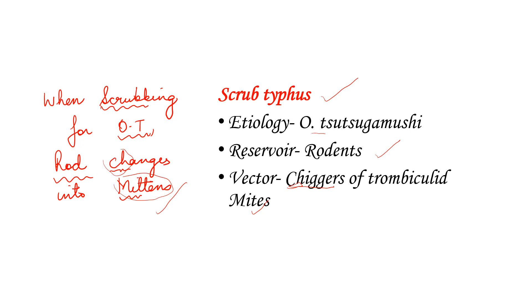Remember, the mites are different in rickettsial pox and scrub typhus. In rickettsial pox they are gammacid mites, while in scrub typhus they are trombiculid mites. It is the larval stages of the trombiculid mite, which are called chiggers, that act as the vector. So: when scrubbing for OT, rod changes into mittens.